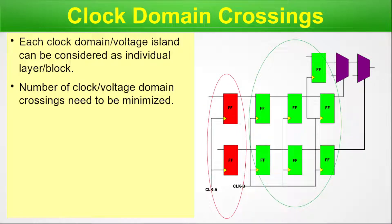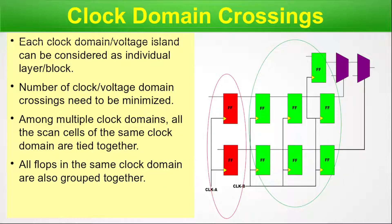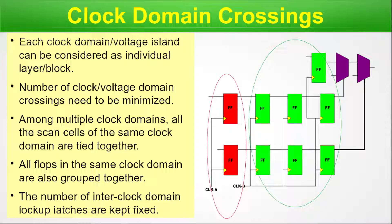The number of clock or voltage domain crossings needs to be minimized. Among multiple clock domains, all the scan cells of the same clock domain are tied together. Scan cells are used for DFT, that is design for testability. All flops in the same clock domain are also grouped together. The number of inter-clock domain lock-up latches are kept fixed.